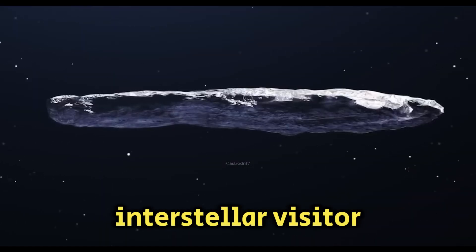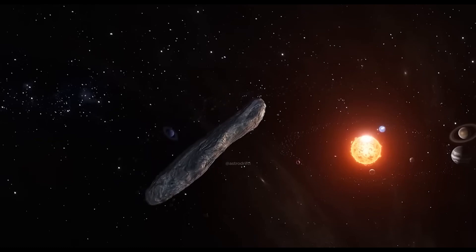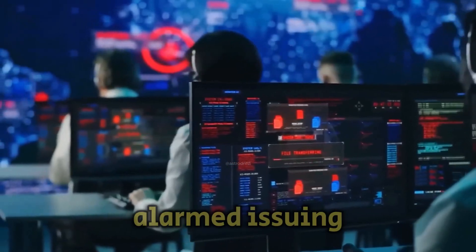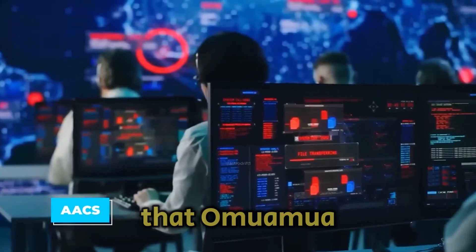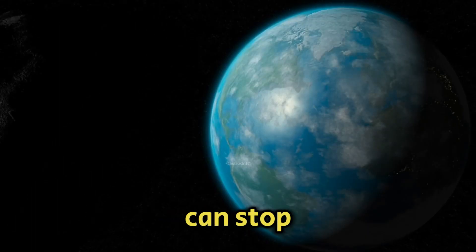The mysterious interstellar visitor, Oumuamua, that once sped through our solar system is back, this time heading straight for Earth at an unprecedented speed. Scientists are alarmed, issuing urgent warnings that Oumuamua will crash into our planet in about two weeks, and nothing can stop it.